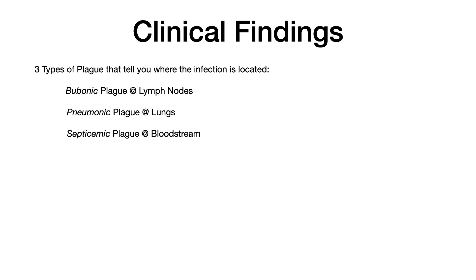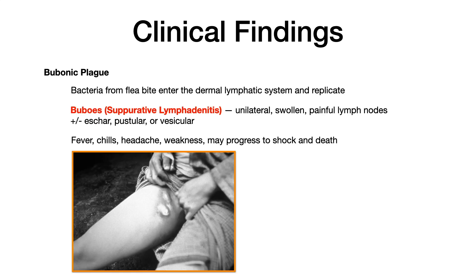Clinical findings are the big area that test writers like to nitpick on exams. When it comes to plague, there are three types: bubonic, pneumonic, and septicemic. These tell you which organ system the plague is primarily targeting. Bubonic is in the lymph nodes, pneumonic is in the lungs, and septicemic is in the bloodstream. The highest yield of these three is bubonic.